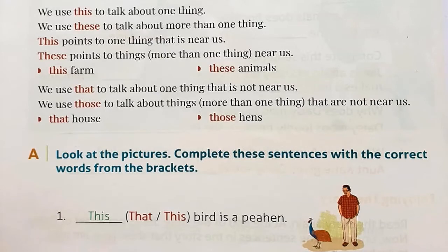We use 'this' to talk about one thing near us. We use 'these' to talk about more than one thing near us. We use 'that' to talk about one thing that is not near us. We use 'those' to talk about things that are more than one and not near us.